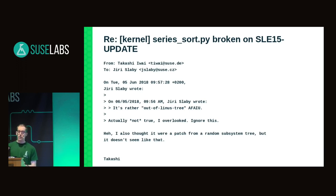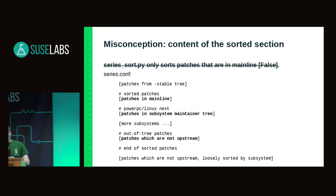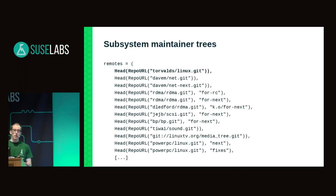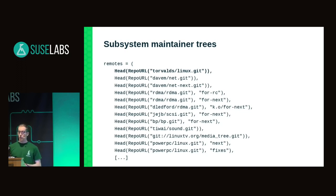One misconception I was made aware of in a discussion on the internal kernel mailing list with Jiri Slaby and Takashi a few months ago: Takashi thought that the sorted section inside series.conf only contains backports of commits that are in mainline. This is actually not the case. Inside the sorted section, we can find backports of commits in mainline, yes, but also commits that are in subsystem maintainer trees and even out-of-tree patches. There are over 40 possible subsystem maintainer trees recognized by the scripts.